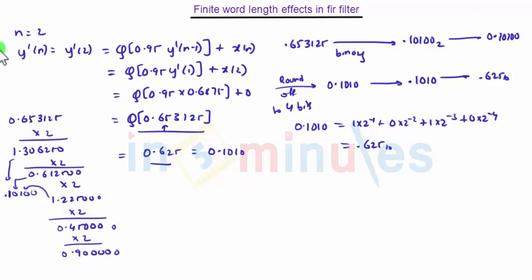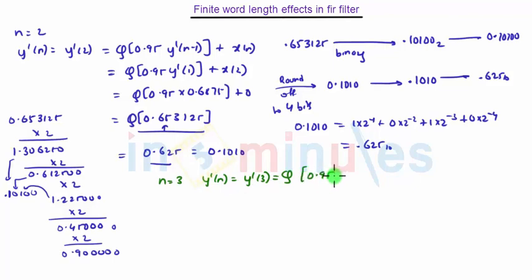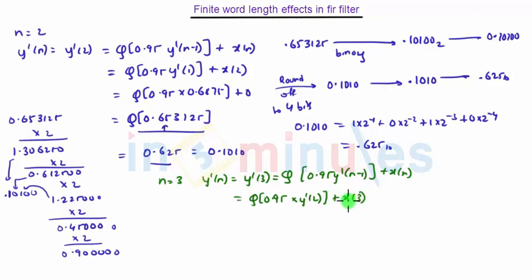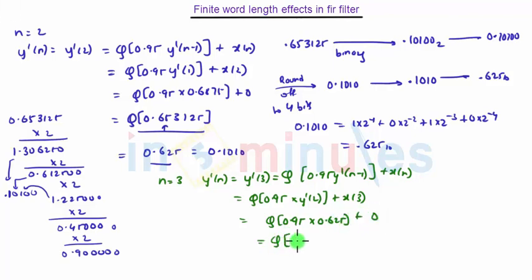Now we will calculate for n equal to 3. When n is equal to 3, y'(3) is given as q of 0.95 times y'(n-1) plus x(n), that is q of 0.95 into y'(2) plus x(3), which is q of 0.95 into 0.625 plus 0, giving q of 0.59375.